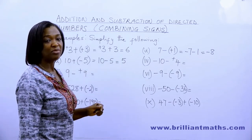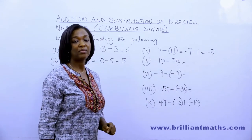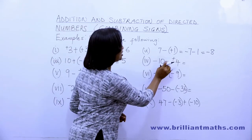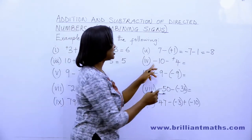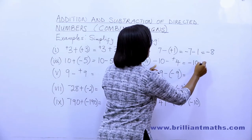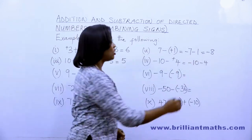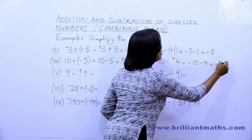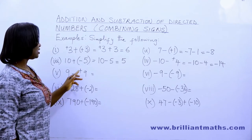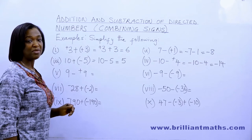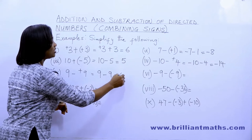In the next example, we have minus ten take away positive four. The two signs in the middle — minus and plus — simplify to a minus sign. So this means minus ten minus four, and from minus ten if you take away four, your answer will be minus fourteen. In the next example, nine minus plus nine means nine take away nine, which gives us zero.